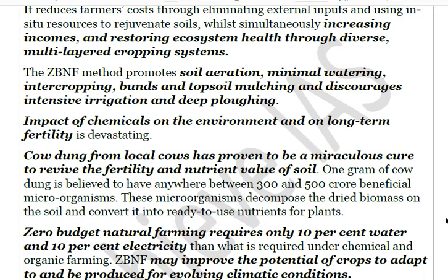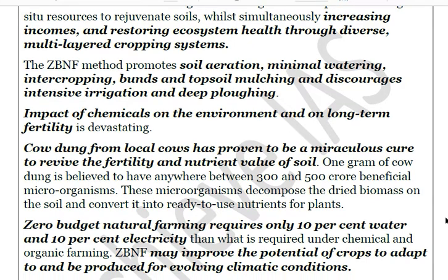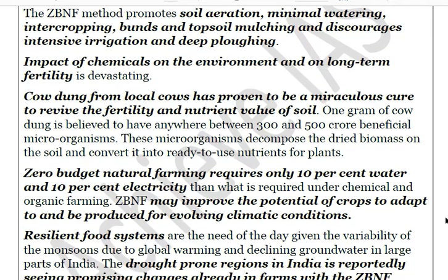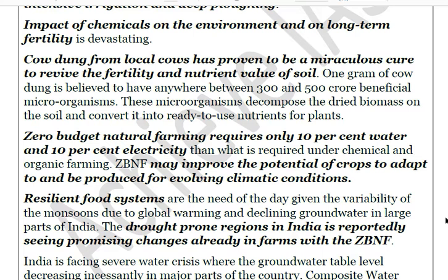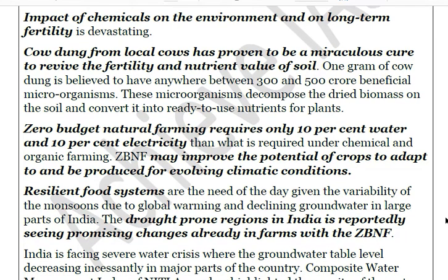Local natural inputs act as a miraculous care to revive the fertility and nutrient value of soil. It is estimated that one gram of cow dung contains between 300 and 500 beneficial microorganisms, which decompose dry organic matter in the soil and convert it into ready-to-use nutrients for plants. ZBNF requires only 10 percent of water and 10 percent of electricity compared to conventional farming, which reduces costs and increases agricultural resilience.